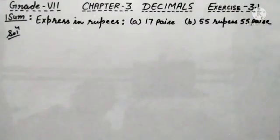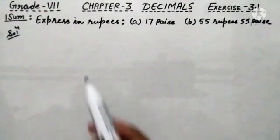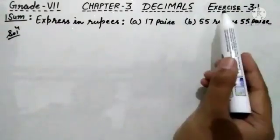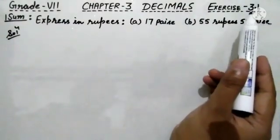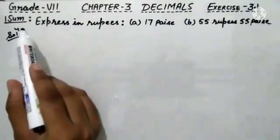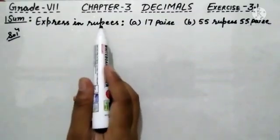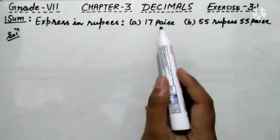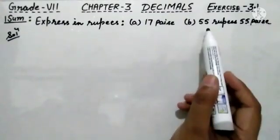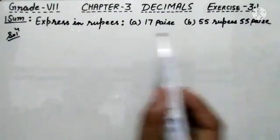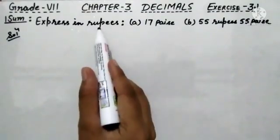Greetings everyone. In this video we are going to start chapter 3 decimals exercise 3.1. The statement of first sum is expressed in rupees, consisting of two subparts A and B, which we have to convert into rupees.